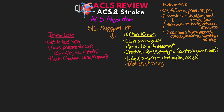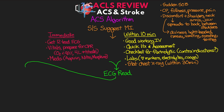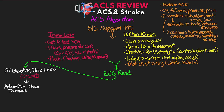From here, the algorithm branches based on the ECG read. The first branch is when our patient has ST elevation or a new left bundle branch block — this is going to be our STEMI. In this case, you want to immediately start adjunctive therapies such as heparin, nitroglycerin, and beta blockers. From here, we need reperfusion therapy stat, which is probably going to mean cath lab in most facilities, but could also be fibrinolytic therapy.